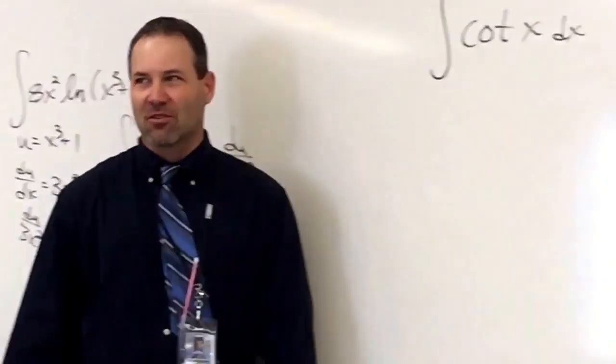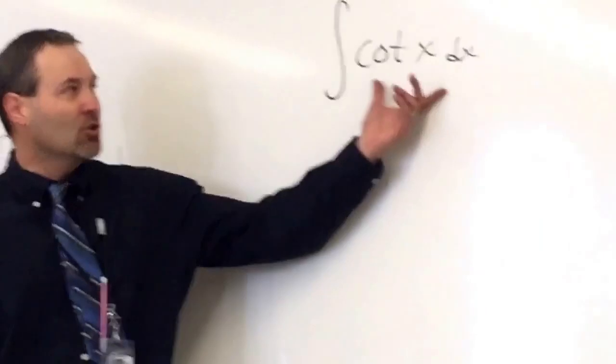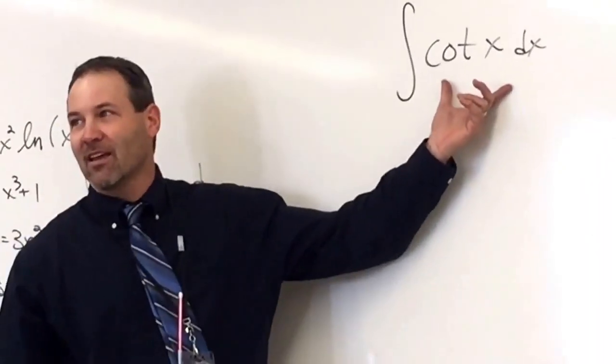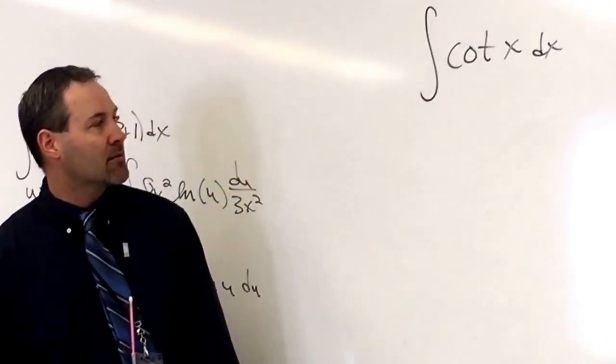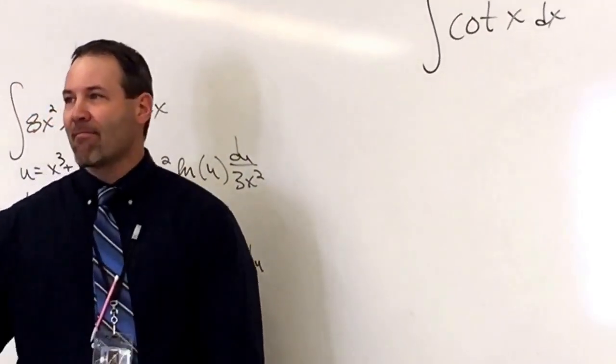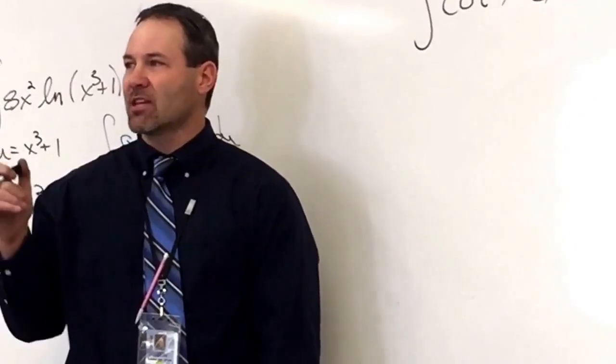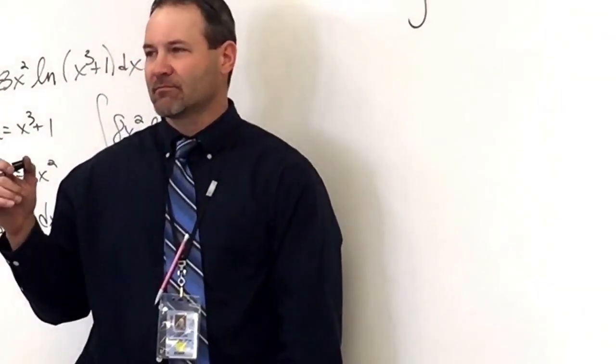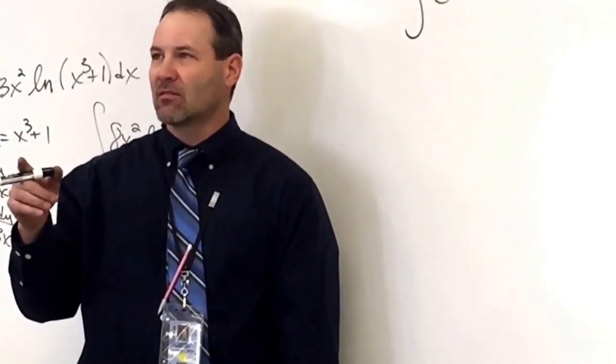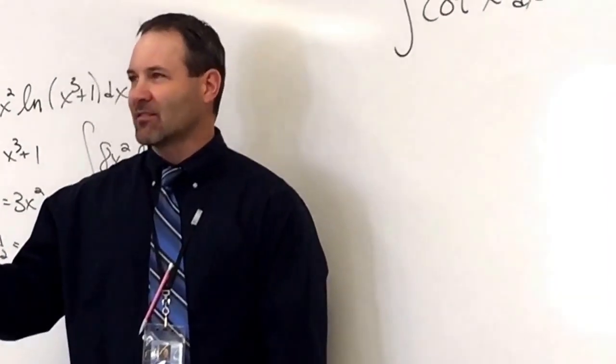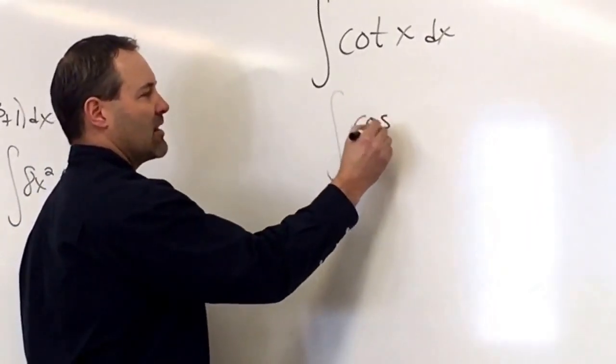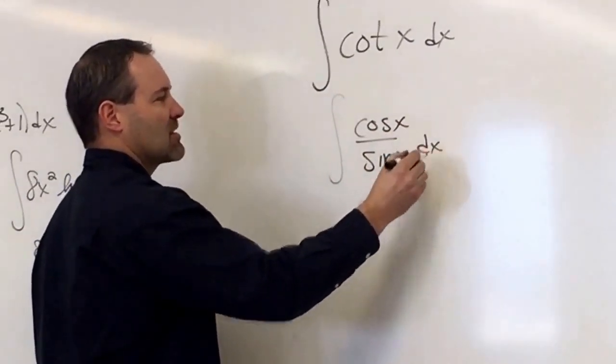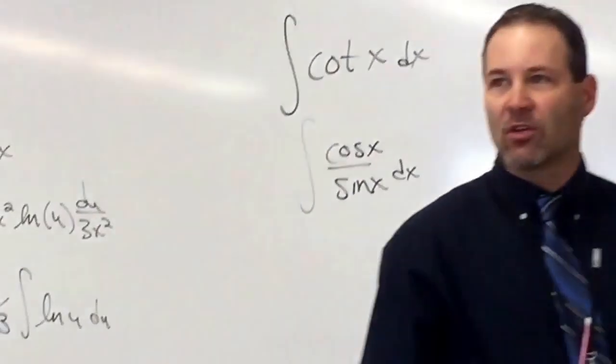Here's another u substitution. We don't know what our u is here. We shouldn't choose u as x. That doesn't really get us anywhere. Cotangent. How can I rewrite cotangent? 1 over tangent. Or cosine over sine. Which one do you want to try? Cosine over sine. I agree. Cosine x over sine x dx. So now we have options for our u.